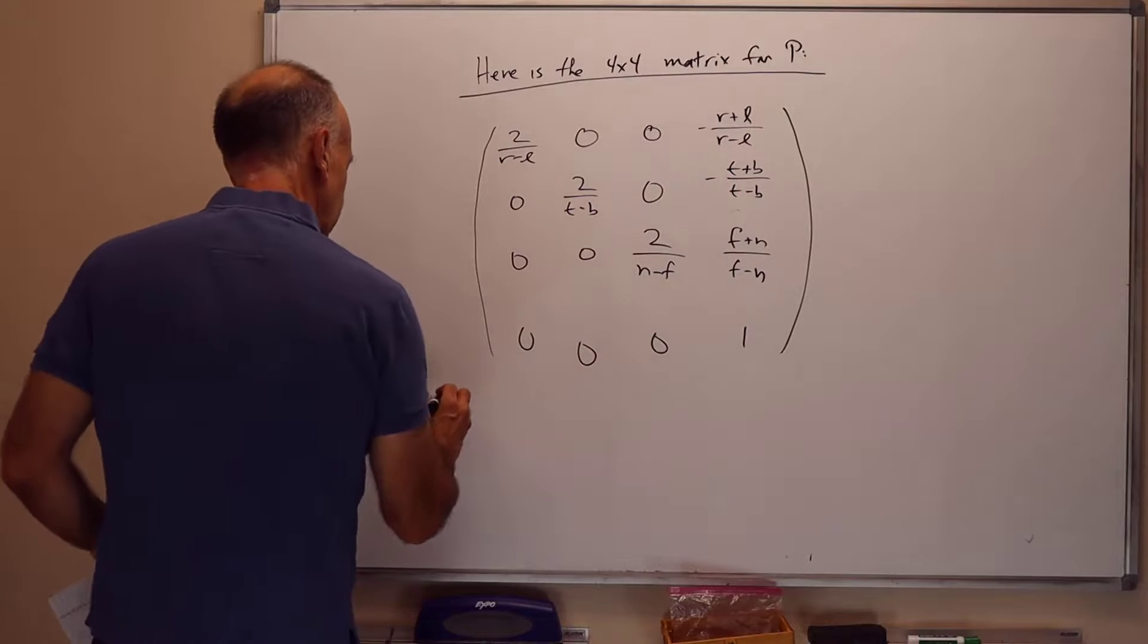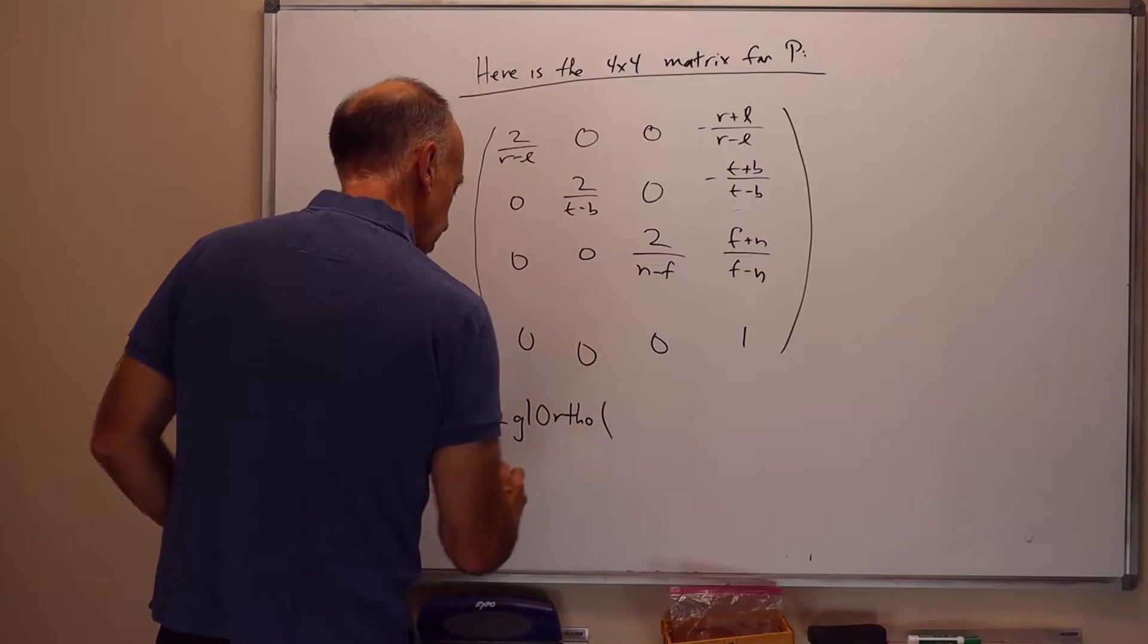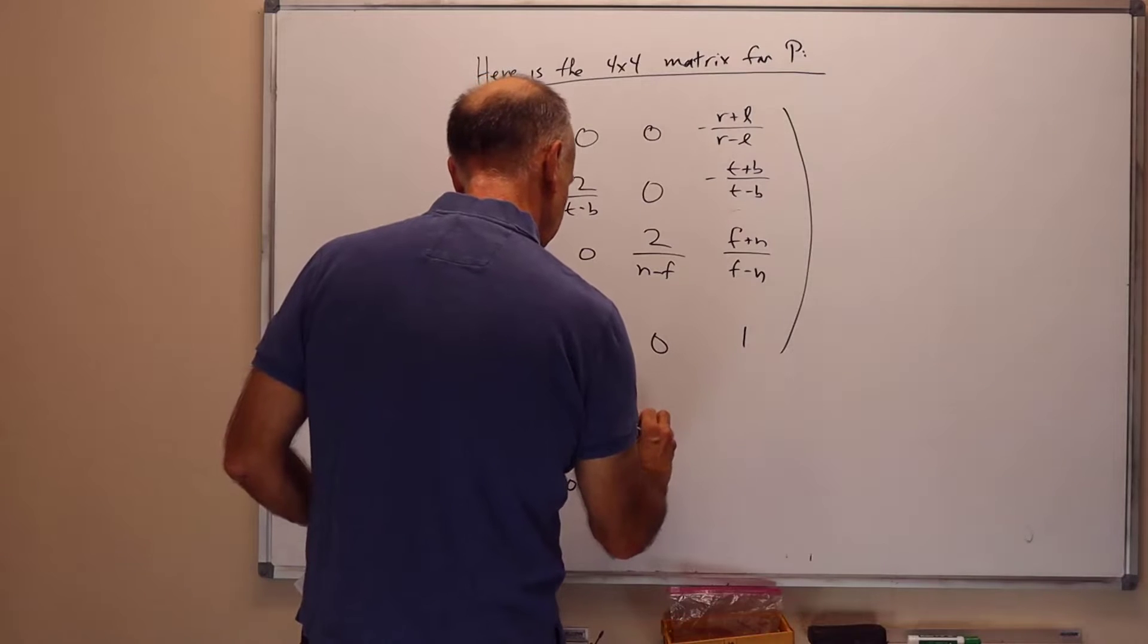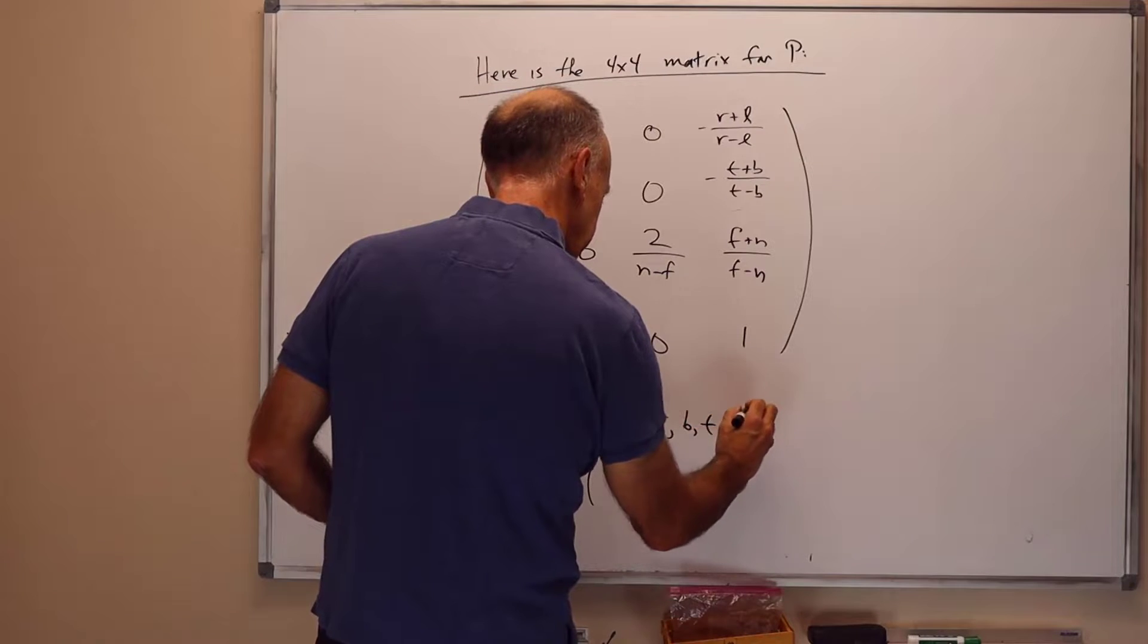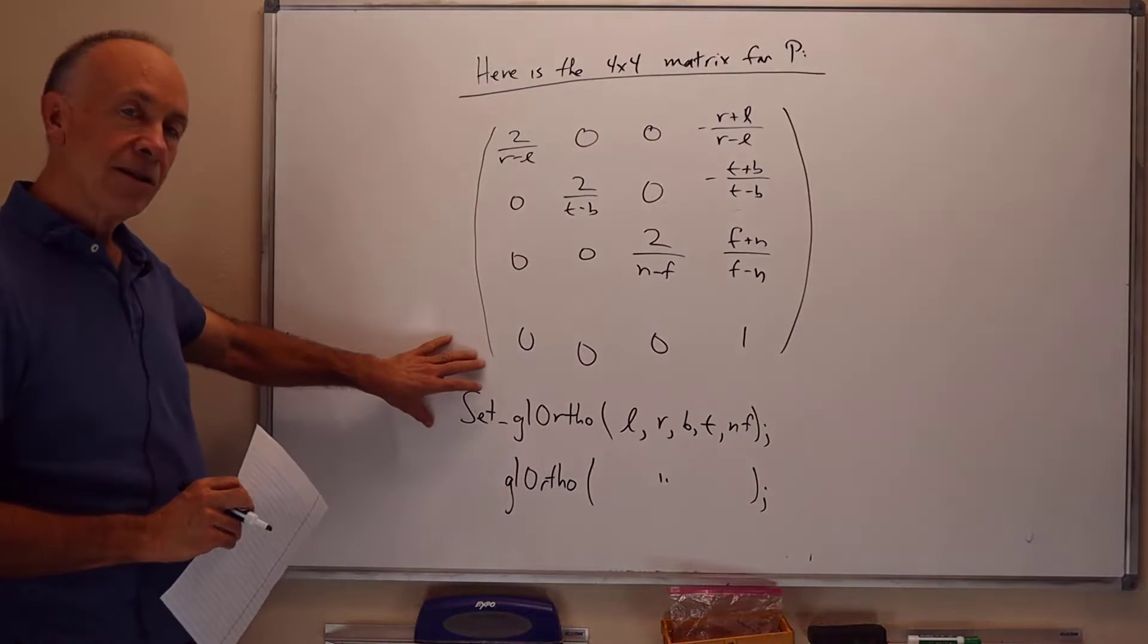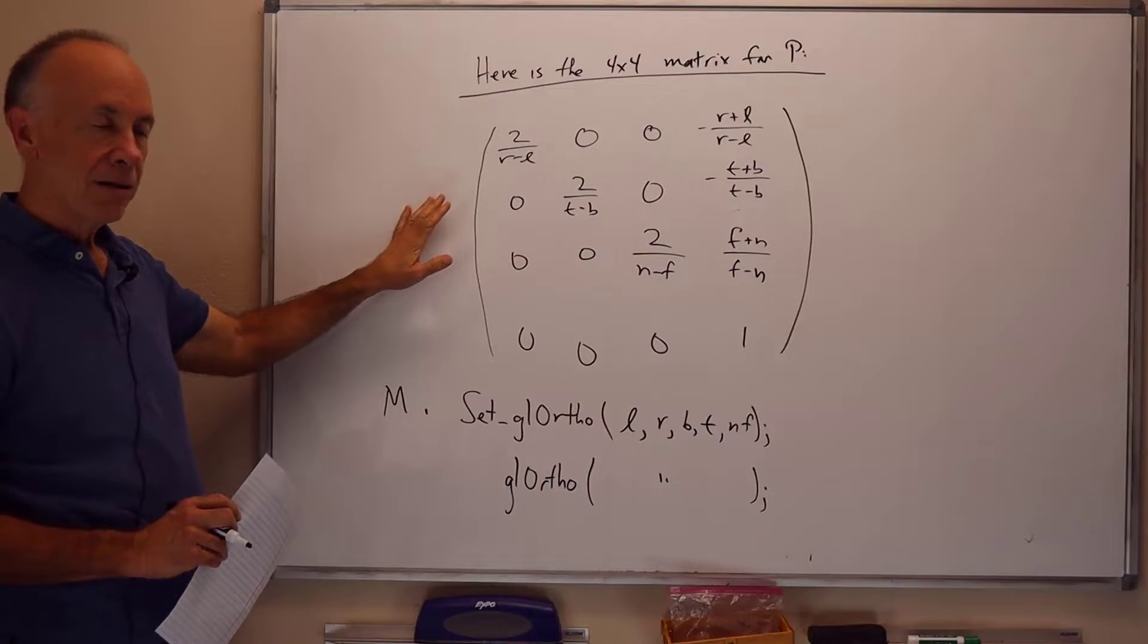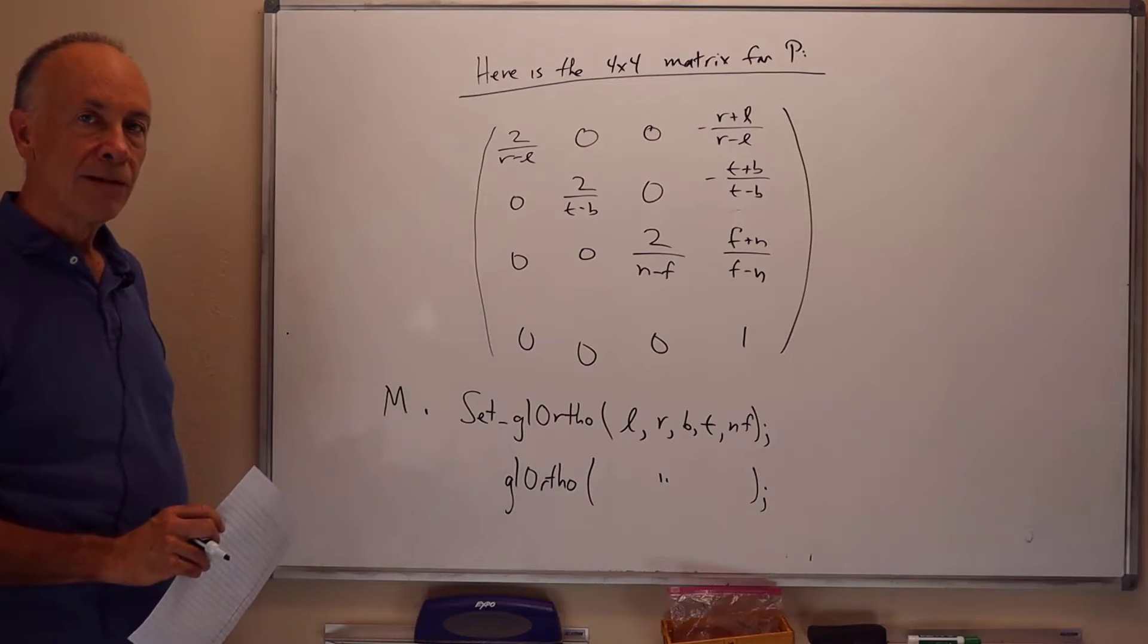There's convenient commands for this in the code that with this course we use set_glortho as a command. This is based on the old legacy or immediate mode OpenGL, glortho command that used to be around. And the arguments to this are the left, right, bottom, top, near, and far values. And the same for glortho if you're using OpenGL commands. And this sets the current matrix. If you have a matrix m.set_glortho loads m with this matrix here. So this is an easy way for setting a projection matrix. There's a built-in command that will just build orthographic projections for you.